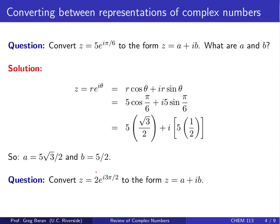For another example, consider z equals 2 times e to the i times 3 pi over 2, and convert that to the form a plus ib. Go ahead and pause the video and work it out. Hopefully you were able to find that z is equal to minus 2i, which means that a is equal to 0 and b is equal to negative 2.